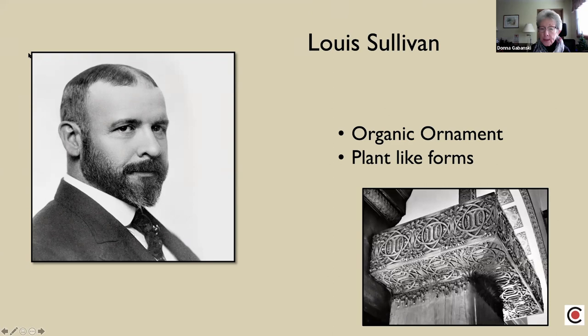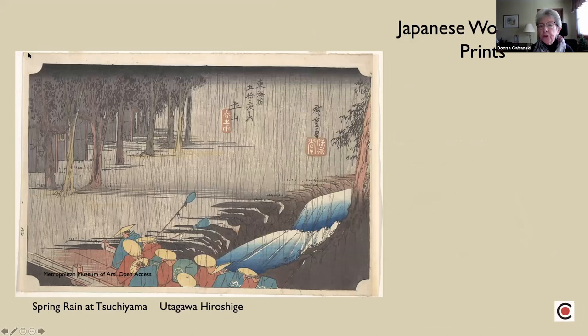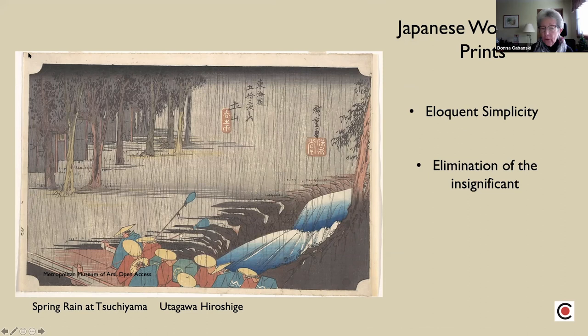You can see a very floral form, not exactly like you see in a traditional Greek column. The third thing that Wright said influenced him were Japanese woodblock prints. From these, he said that they were eloquent in their simplicity and the elimination of the insignificant. And I think you'll see that in so much of Wright's work that we're going to look at.